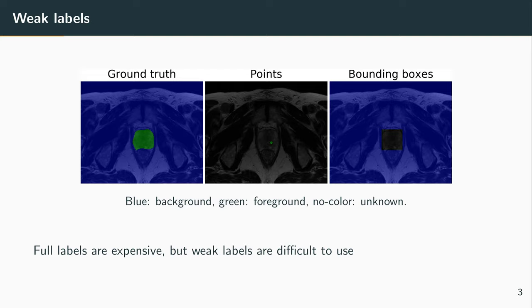So to give an example of weak labels, in this case point annotation or bounding box annotation, let's compare to a ground truth. When we have a complete ground truth annotation, we have information for each pixel. In that case, we know that all the blue pixels belong to the background and all the green pixels belong to the foreground.